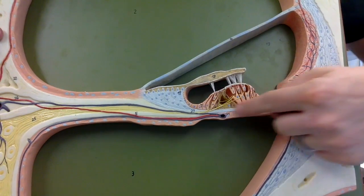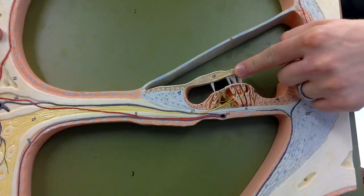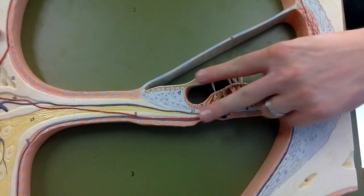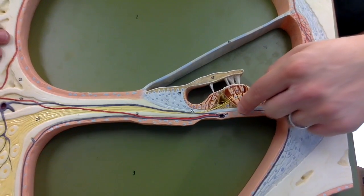The bottom part of it is going to be the basilar membrane. So it's a sandwich: tectoral on top, basilar on the bottom. That's an organ of Corti sandwich. This is the organ of Corti.